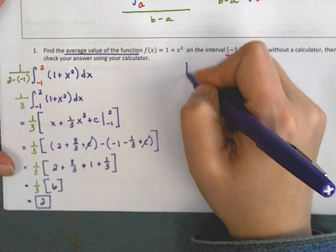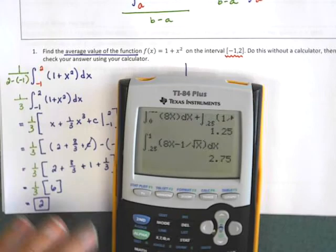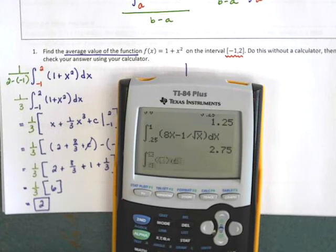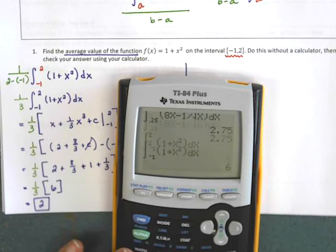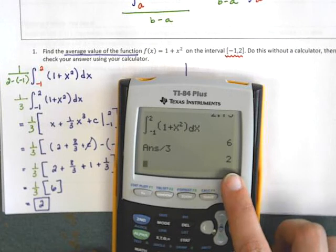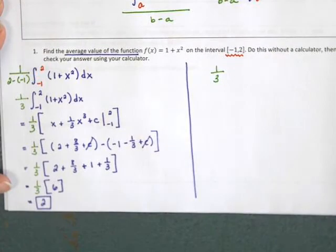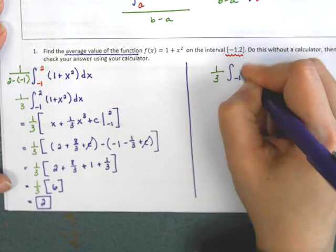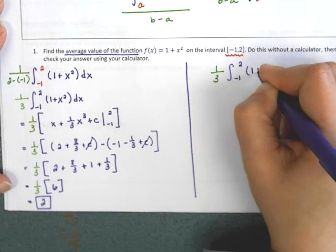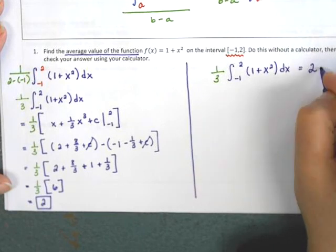If I want to check this on my calculator, I can type it in using math 9. I would integrate from negative 1 to 2 of 1 plus x squared dx, then divide by 3 for the 1 third part, and verify that my answer is 2. Literally: 1 third times the integral from negative 1 to 2 of 1 plus x squared dx gives me 2 to confirm.